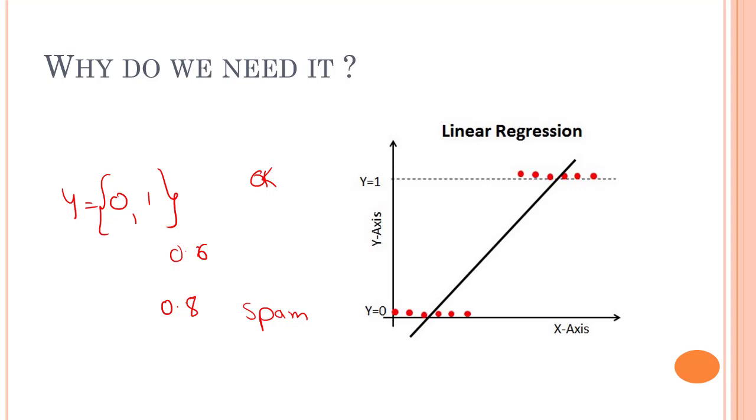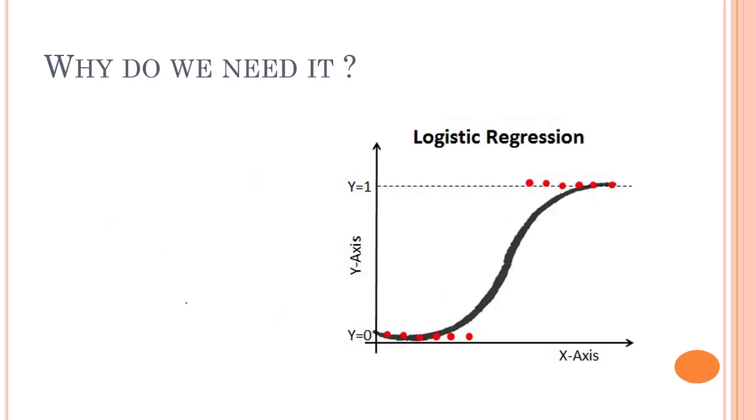In this kind of scenario, rather than having a straight line, we have something which is S-shaped. We can have an S-shaped line which will actually help. We can have a threshold point at exactly 0.5.